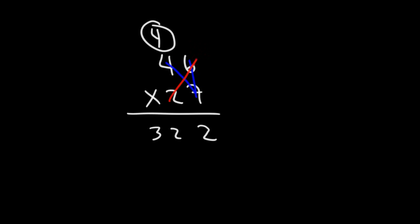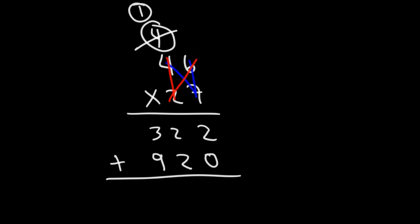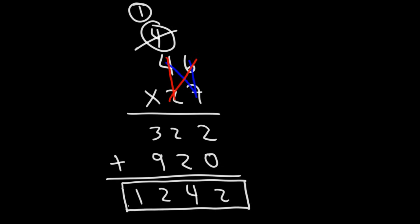Next we're going to multiply 2 times 6, but before we do that we need to write a 0. And then 2 times 6 is 12. We'll write the 2 and then carry over the 1. Next we have 2 times 4 which is 8, and then plus 1, that's 9. So now we need to add these two numbers. 2 plus 0 is 2, 2 plus 2 is 4, 3 plus 9 is 12. So the answer is 1,242.